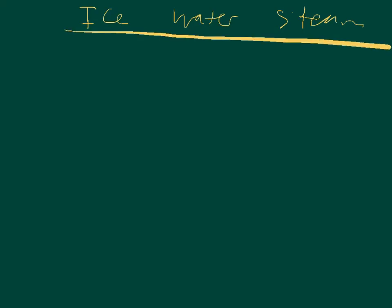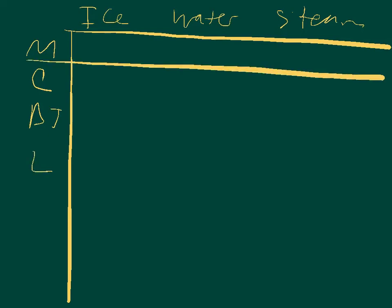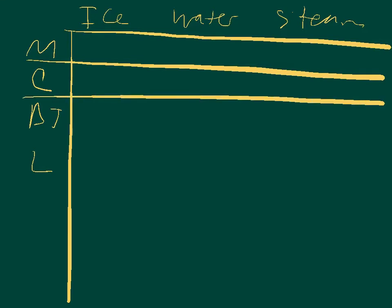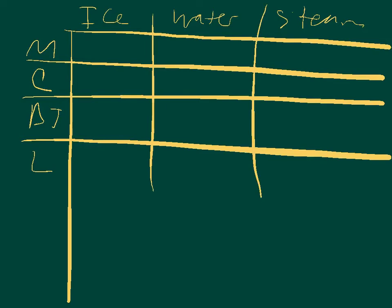I'm going to set up a table like I typically do. So I'm going to have ice, water, and steam as my three phases. I need to know the mass, the specific heat, the change of temperature, and the latent heat. Some of those are going to apply, some are not. For example, I need to know the mass of all of them.